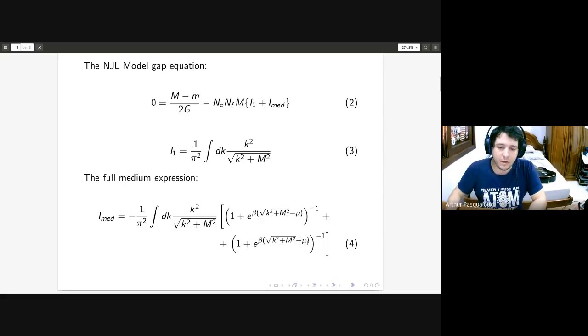These terms account for the particles and the antiparticles. When T, which is one over beta, and mu are equal to zero, both these terms go to zero. If we're in the vacuum where T equals mu equals zero, we will only have the integral number one or equation number three, and this is why we call i1 the vacuum integral.